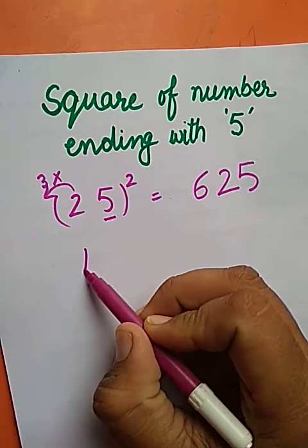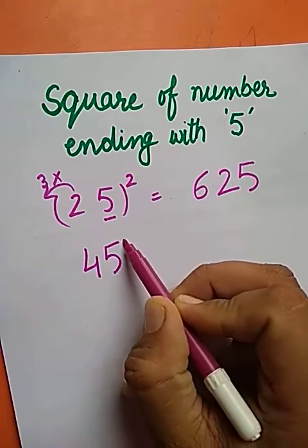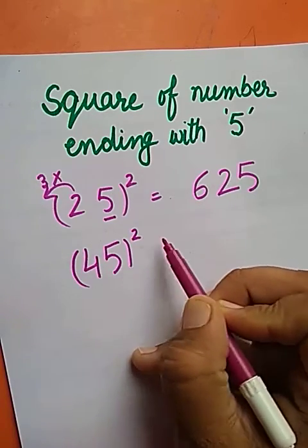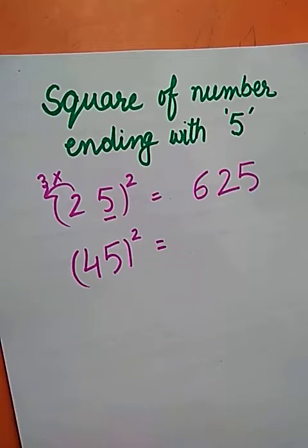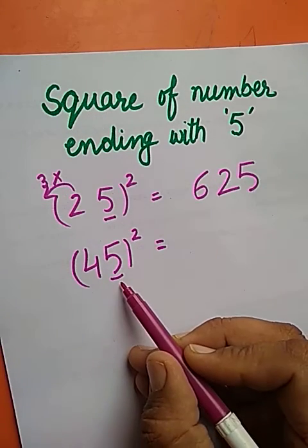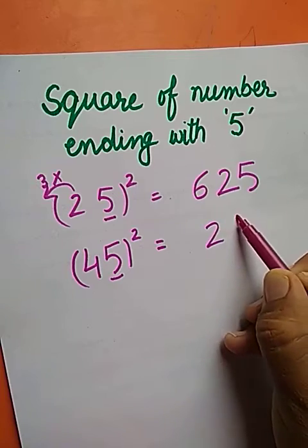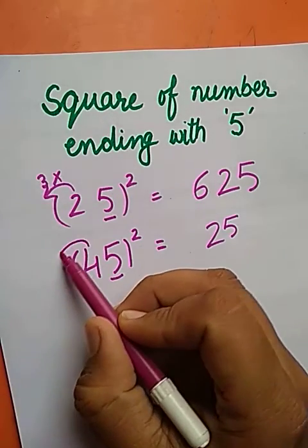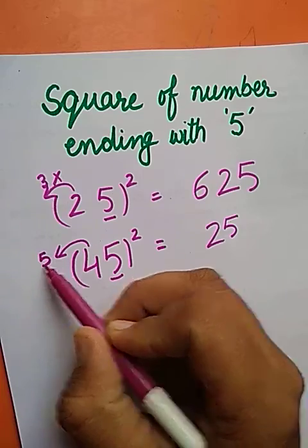Now let us find the square of number 45. 5 is the ending digit. 5 times 5 is 25. The number next to 4 is 5.